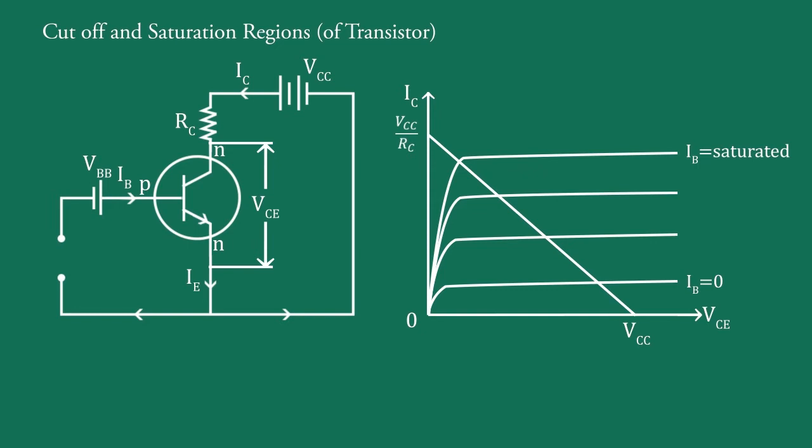The point where the DC load line intersects the IB equals 0 curve is known as the cut-off point. Here, this is the cut-off point. At this point, base current is 0 and collector current, which is known as collector leakage current ICEO, is negligibly small as the normal transistor action is lost.